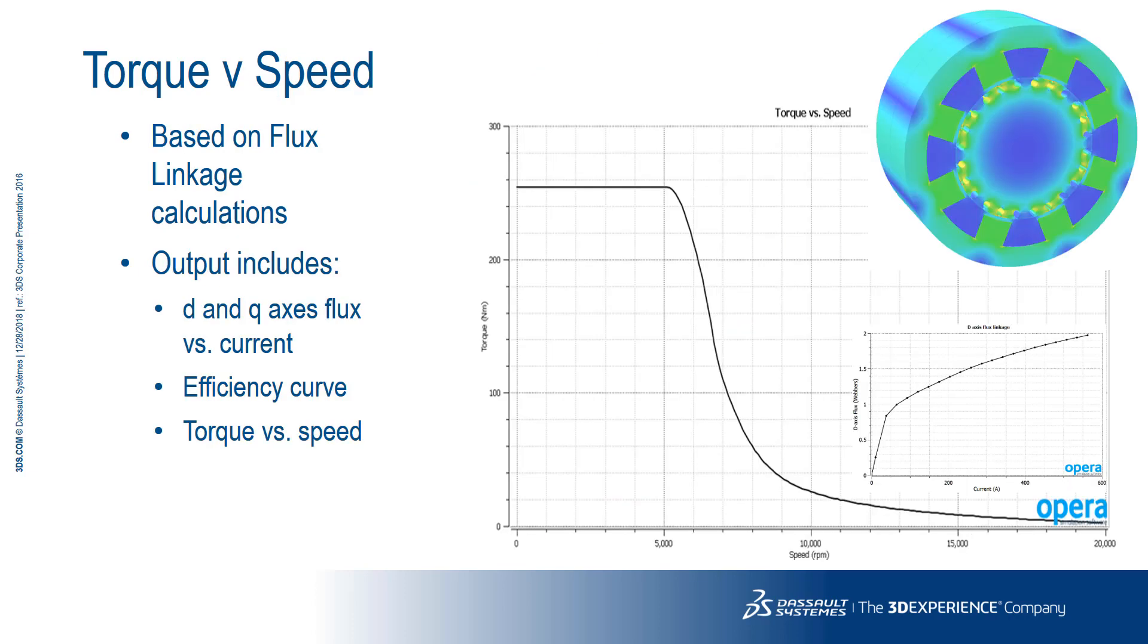The torque versus speed analysis provides a quick way of evaluating the torque speed characteristics based on flux linkage calculations. The output includes D and Q axes flux versus current, efficiency curve, and also torque versus speed.